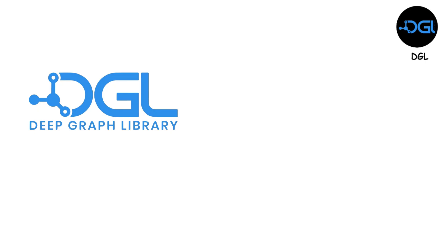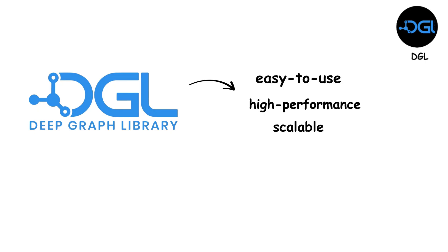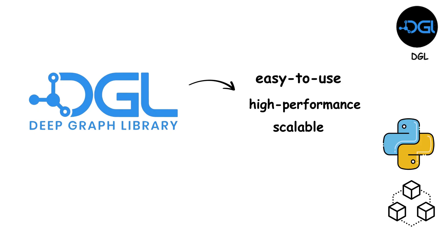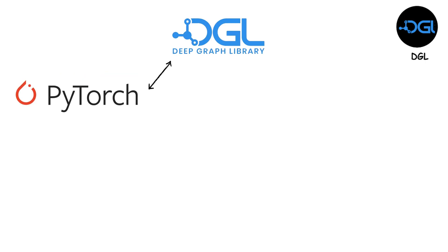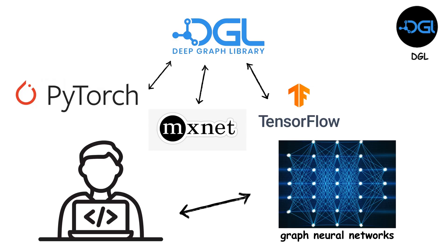DGL, the Deep Graph Library, is an easy-to-use, high-performance, and scalable Python package for deep learning on graphs. It seamlessly works with existing deep learning frameworks like PyTorch, MXNet, and TensorFlow, allowing users to develop graph neural networks easily.